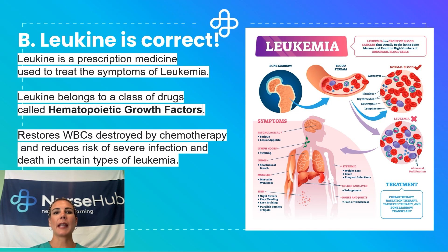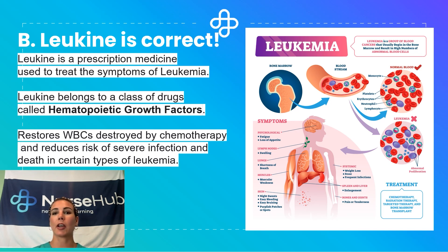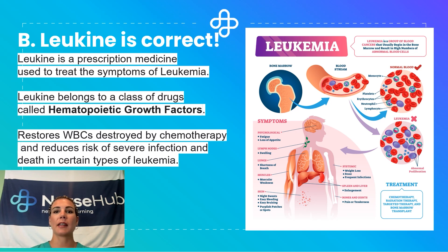Leukine is a prescription medicine that is used to treat symptoms of leukemia. Leukine belongs to a class of drugs called the hematopoietic growth factors. It restores the white blood cells that are destroyed by chemotherapy and reduces the risk of severe infection and death in certain types of leukemia.